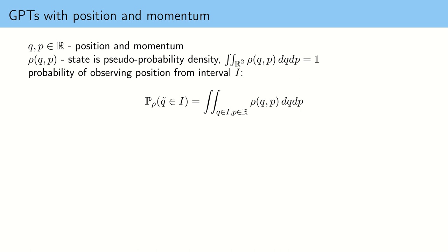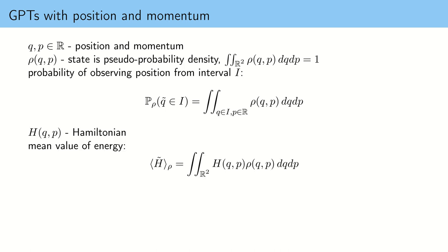We postulate that we can predict the probability of observing the position of the system to be from some interval E by integrating over all momenta but only over positions from that interval E. Similarly, one can write a similar postulate for predicting probabilities of observing momentum. Given something like a Hamiltonian — a function representing the energy of the system — we postulate that we can compute the mean value by integrating the Hamiltonian against the pseudo probability density.